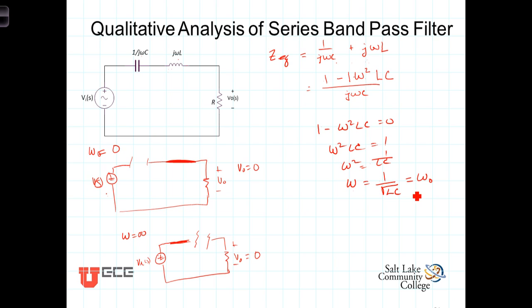Thus, this quantity, 1 over the square root of LC, is a characteristic quantity of this circuit. And we now understand why it's called the natural or the resonant frequency.